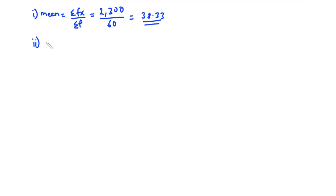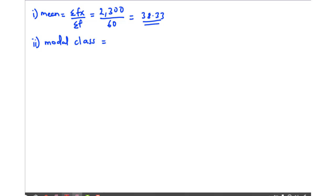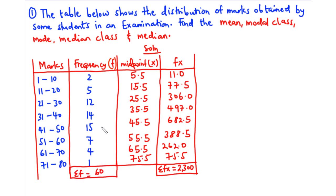Now let's find the modal class. The modal class is the class or interval with the highest frequency. Looking at the table, the interval with the highest frequency is 41 to 50, because values within this interval occur 15 times. So the modal class is 41 to 50.